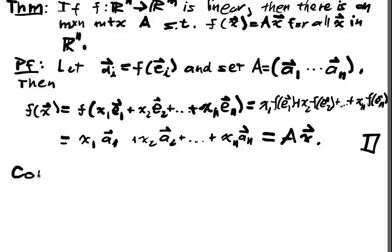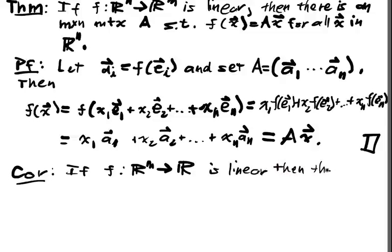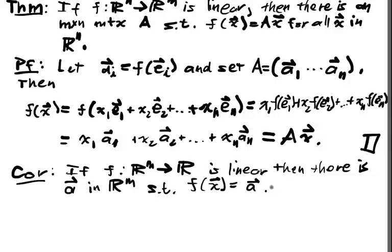As a quick corollary to this, if f from R^m into R^1 is linear, then there is an a in R^m such that f of x is equal to a dotted with x, so dot product with x.